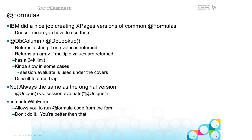If @DbColumn or @DbLookup returns one value, it comes back as a string; if it returns multiple values, it returns an array. IBM couldn't have just returned an array with one value in it? That inconsistency is painful — if you don't trap for it and handle it correctly, you're going to crash. It also has a 64k limit, which in 2013 is a problem. @DbColumn and @DbLookup are not the fastest things out there and are very difficult to error-trap. And they're not always the same as the original version — like @Unique, which returns a different type than the old-school session.evaluate.